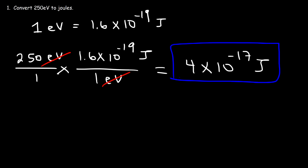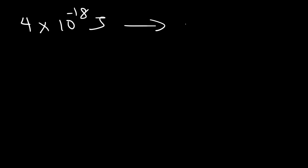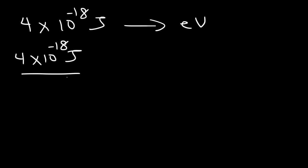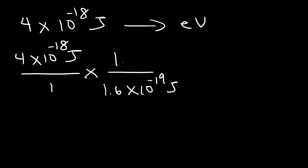Now let's convert in the other direction. Given 4 times 10 to the negative 18 joules, we use the same conversion: 1.6 times 10 to the negative 19 joules per electron volt. Set it up so that the unit joules cancels, leaving behind electron volts — meaning we need to divide. This gives us 25 electron volts.